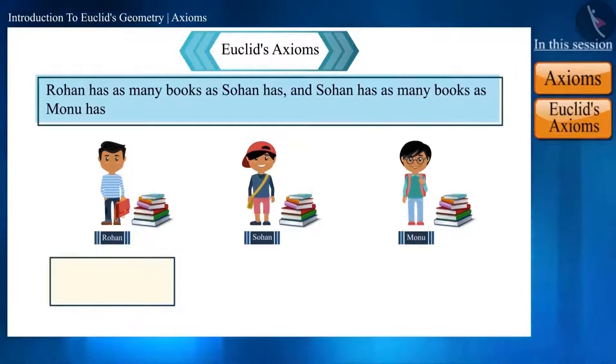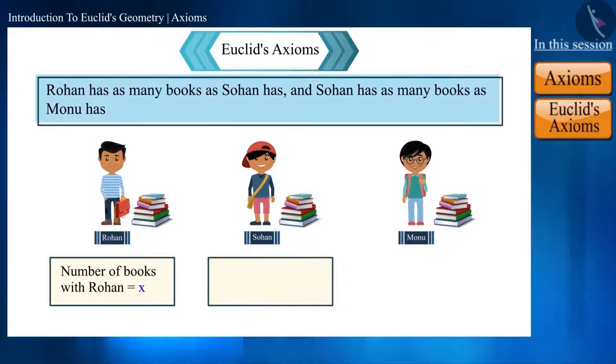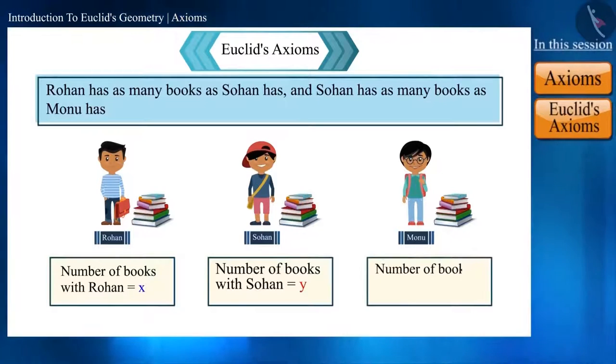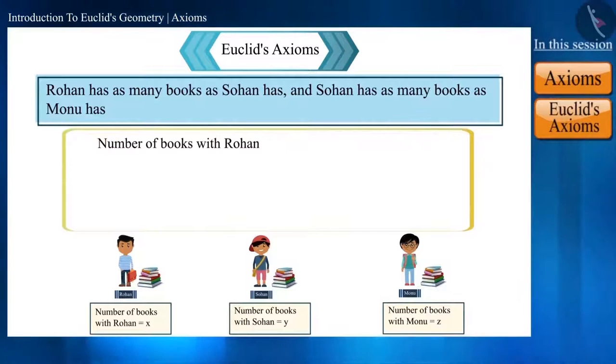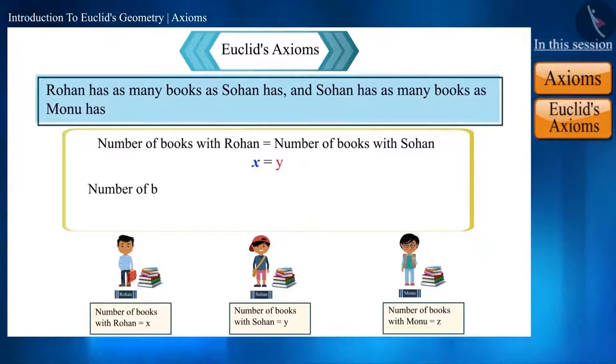Let's see, suppose Rohan has x number of books, Sohan has y number of books, and Monu has z number of books. According to the statement, Rohan has the same number of books as Sohan. That is, we can say that x is equal to y. And given that Sohan has the same number of books as Monu, that is, y is equal to z.